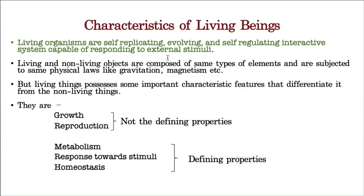Let us take the meaning of this definition word by word. Living organisms are self-replicating — that means this organism should have the capability to produce young ones of their own kind. For example, one lion is there, and this lion can be able to produce its baby, called a cub.